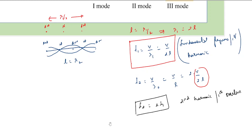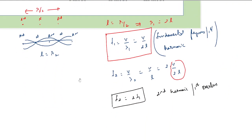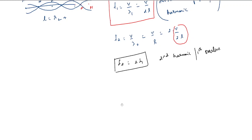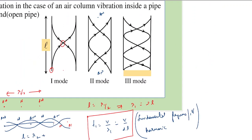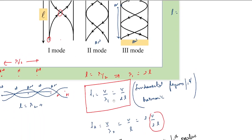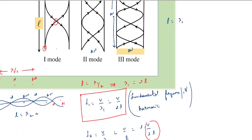The next case would be where we have anti-node, node, anti-node, node, and anti-node. In this case, the length of the tube contains one complete wavelength plus half a wavelength. We call this wavelength lambda 3, so the length L equals lambda 3 plus half — giving us L equals 3 times lambda 3 divided by 2, or lambda 3 equals 2L divided by 3.